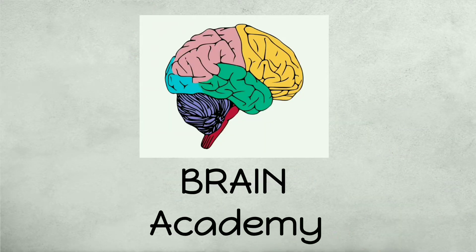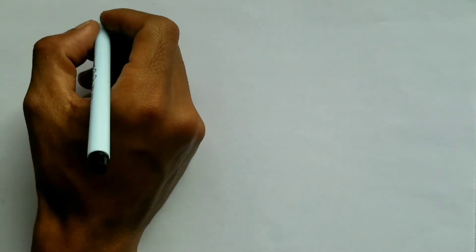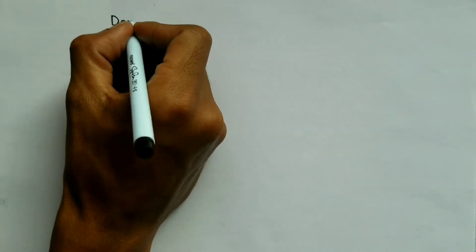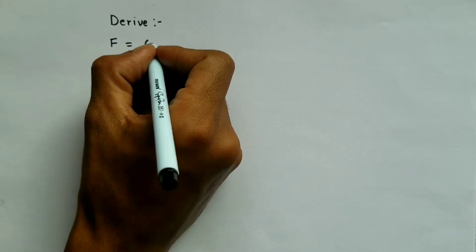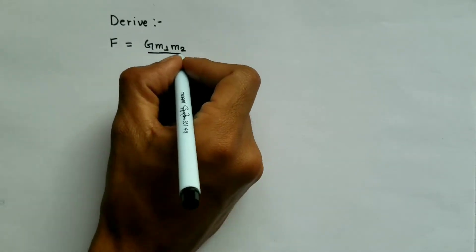Welcome to Brain Academy. In this video we are going to derive the formula of gravitational force which is F equals to G m1 m2 by d square.